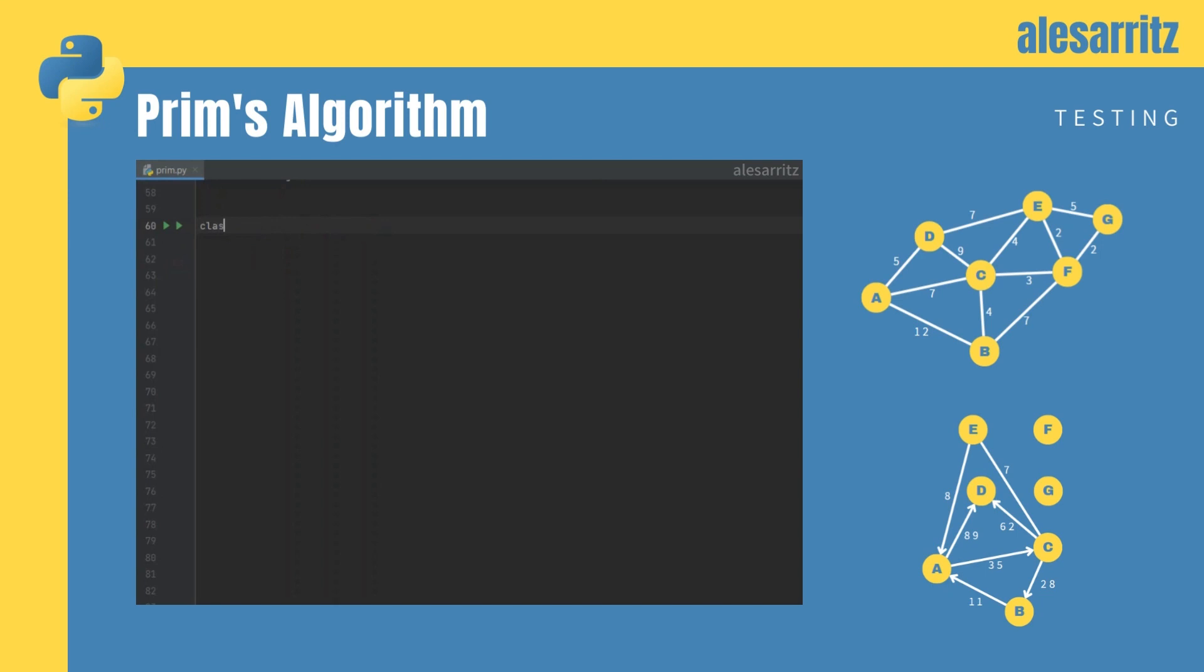Now, let's write a test class to check if our algorithm works correctly. In the first test, we will build the graph from the initial example, and then we'll check if the algorithm returns the correct weight.